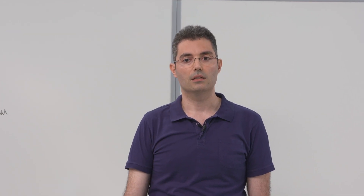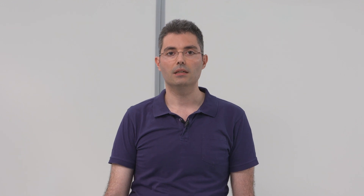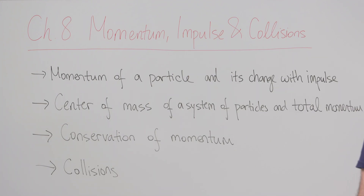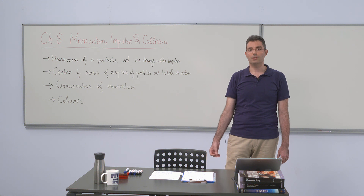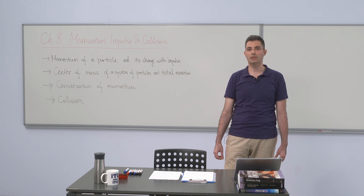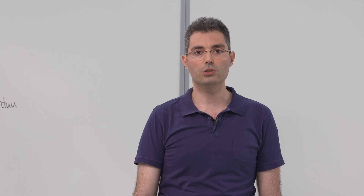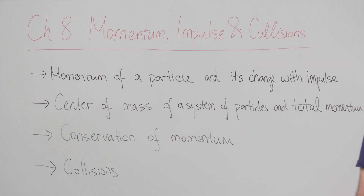The total momentum will be related to a coordinate called the center of mass of the system. We will study the motion of the center of mass under external forces and also when the particles are interacting with each other. Then we will see that when the total external force on the system vanishes — that is, we have an isolated system — the total momentum of the system will be conserved. This is the conservation of momentum, an extremely useful concept when we study collisions. We will distinguish between elastic and inelastic collisions depending on whether kinetic energy is conserved or not.